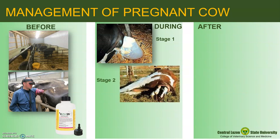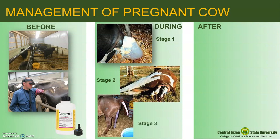The next stage is the expulsion of the fetus. In a normal position, the forelimbs appear first followed by the head. This takes around 15 to 30 minutes. The last is the expulsion of the placenta. It takes around 4 and a half hours for the placenta to drop off after expulsion of the calf in water buffalo, and around 5 to 6 hours in cattle. If the placenta is not expelled, this is classified as retained placenta and must be assisted.